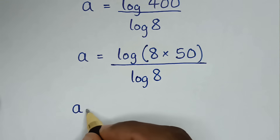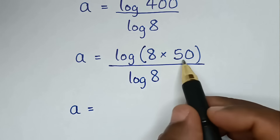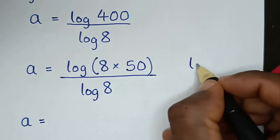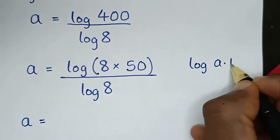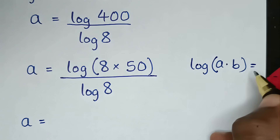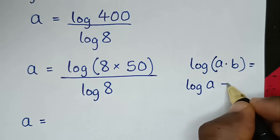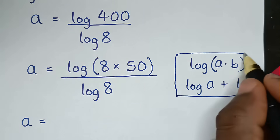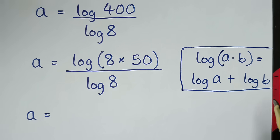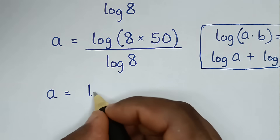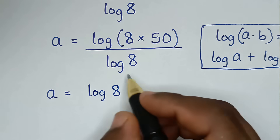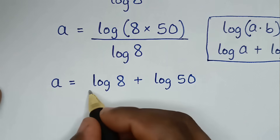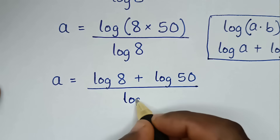Then it will be a is equal to log of 8 times 50, over log of 8. This part is in the form of the rule log(a·b) = log a + log b. So we apply this form: log of 8 times 50 becomes log of 8 plus log of 50, over log of 8.